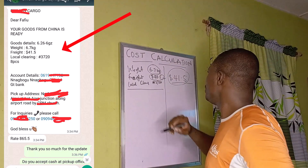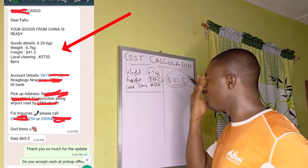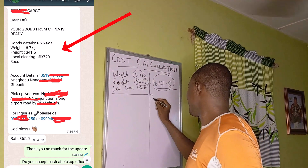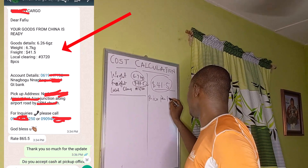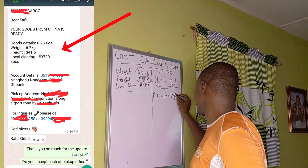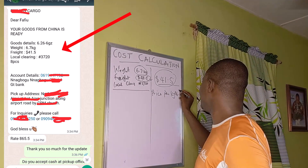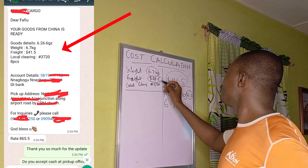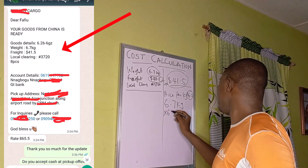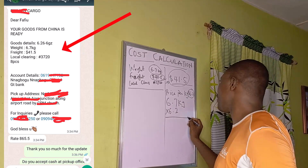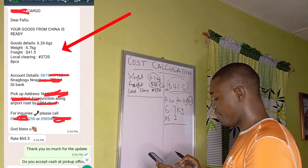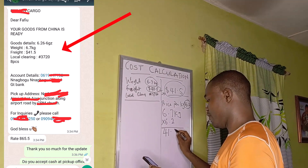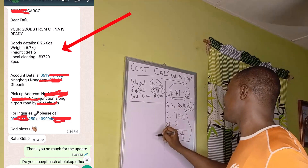The price per kg must be given to you by your shipping company. For instance, the shipping company I used to ship this item charges 6.2 USD per kg. So to get the international flight cost: 6.2 multiplied by 6.7 kg gives us 41.54 dollars. That's how they arrive at the flight price.